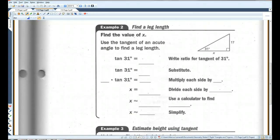Example 2. Find the value of X. Okay. Tangent of 31 degrees, we already know, is the opposite over the adjacent side. So in this case, 17 over X. Okay.